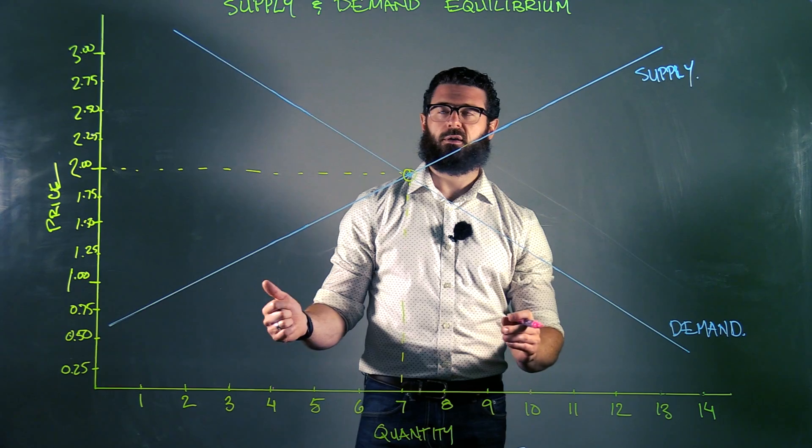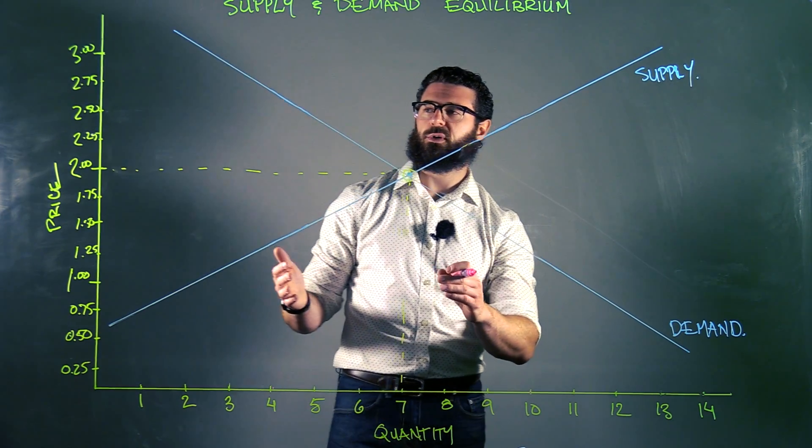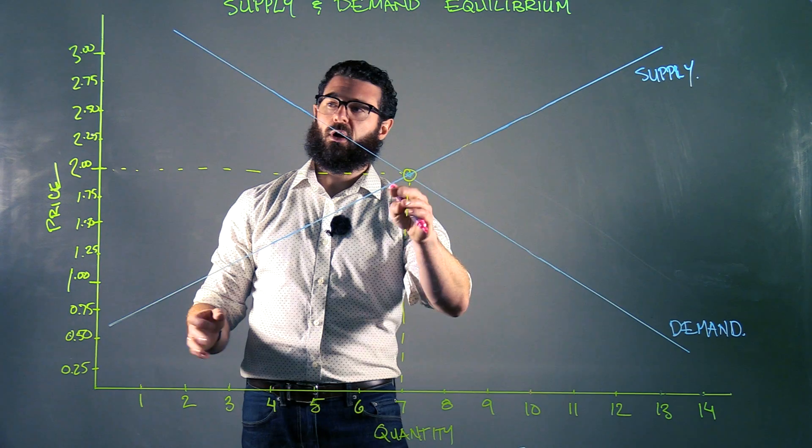So back to our ice cream example here, if we look at our equilibrium right now, this is the point where they cross.